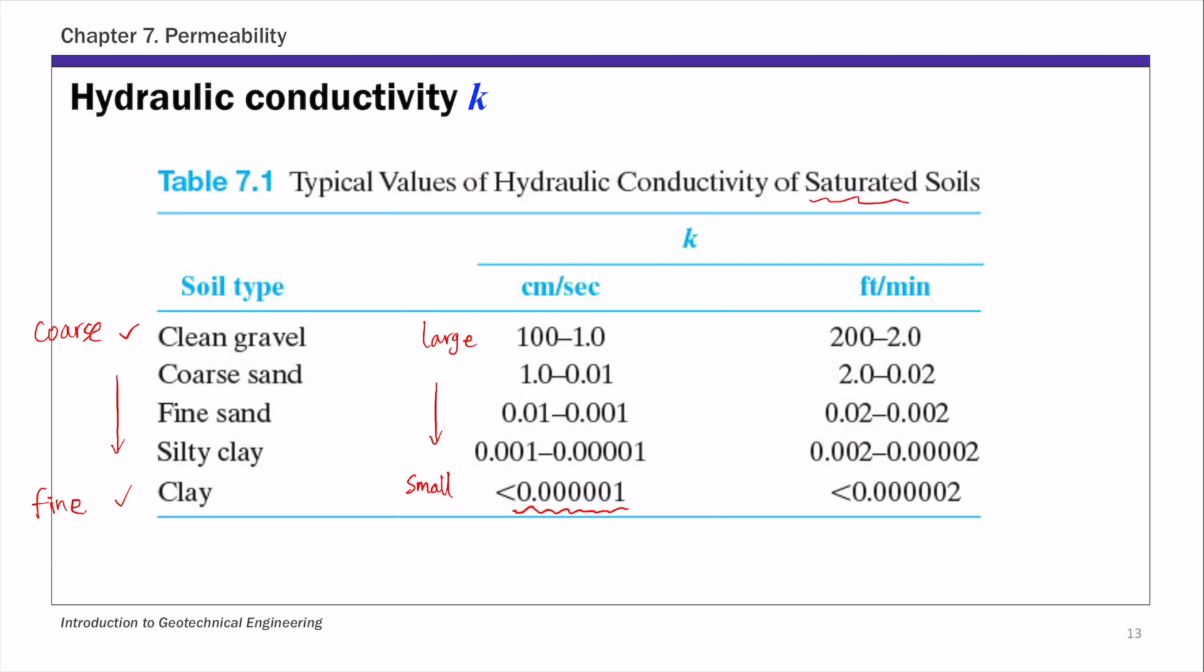For our example, k is 0.0036 centimeters per second. From this table, you can tell this 0.0036 falls within the range of 0.01 to 0.001 centimeters per second.